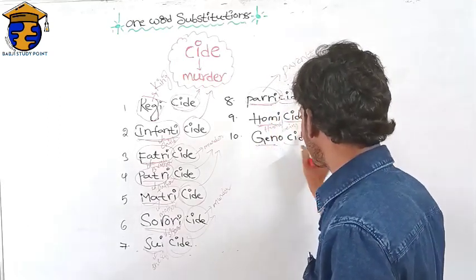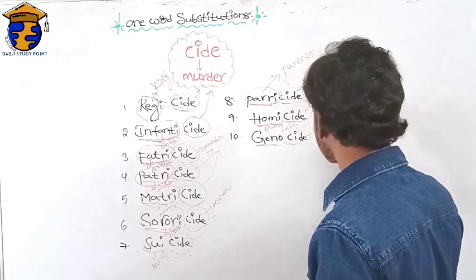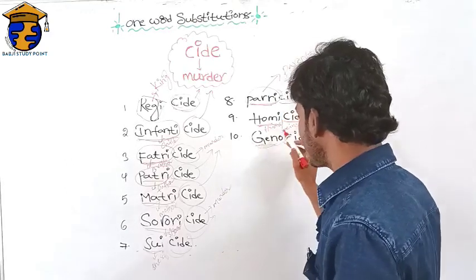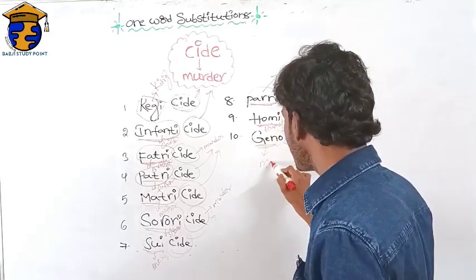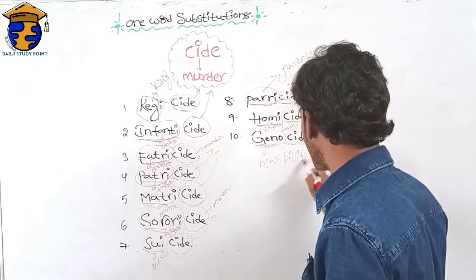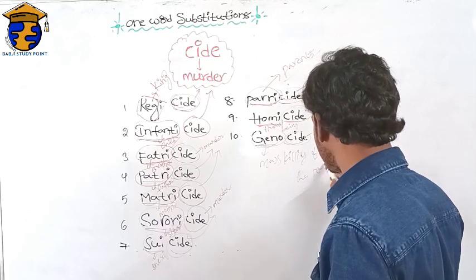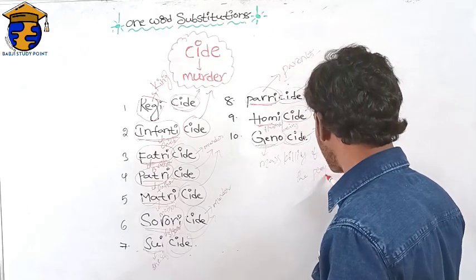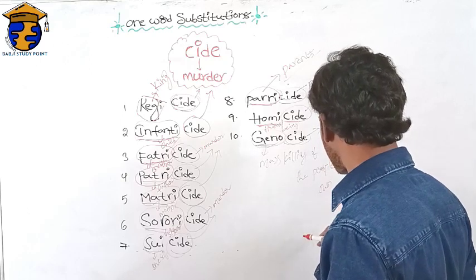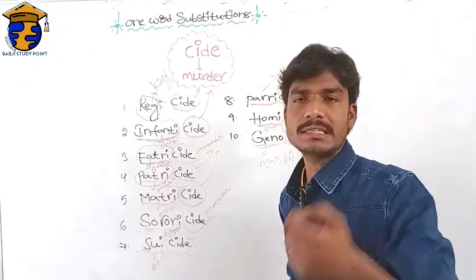Next one: genocide. '-cide' means murder. Genocide means mass killing — the mass killing of people of one kind is called genocide.